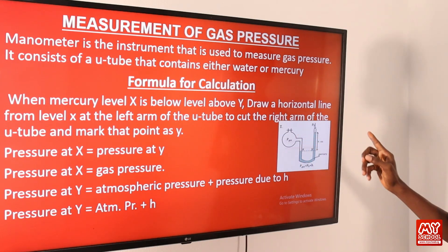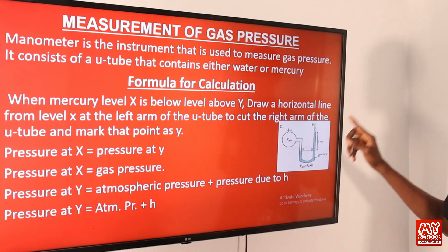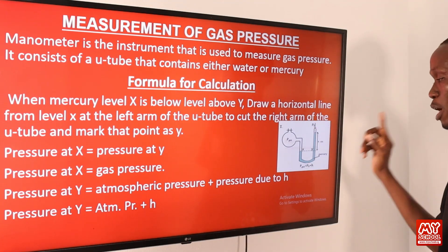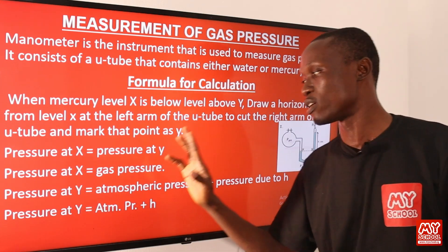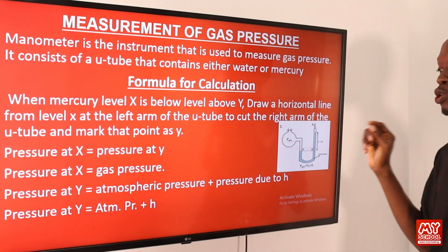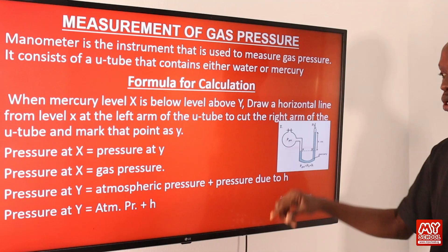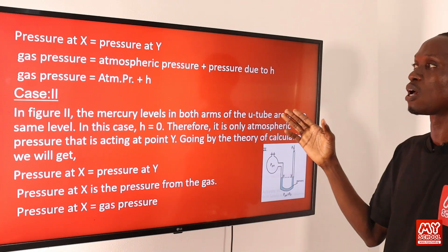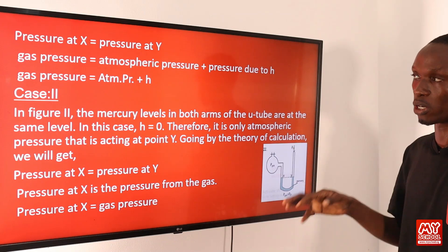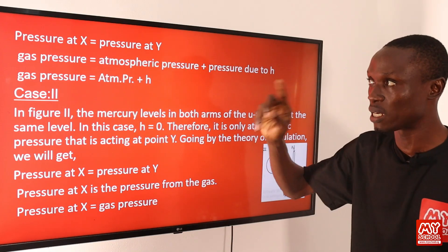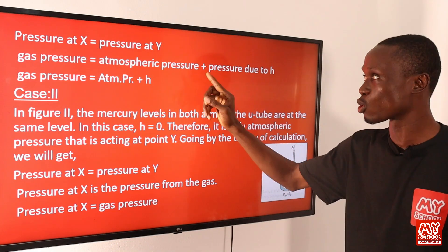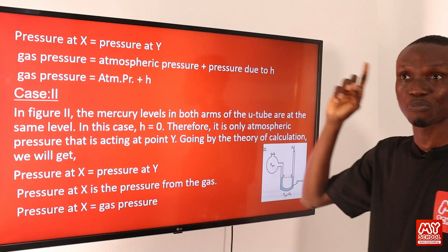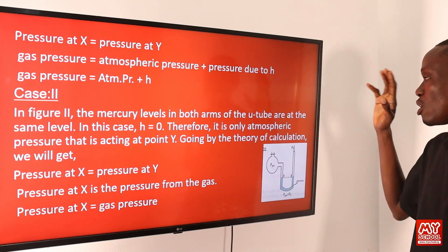The pressure at S is due to the gas pressure, and the pressure at Y is due to atmospheric pressure, plus the pressure due to the height of mercury column h. So, pressure at Y equals atmospheric pressure plus pressure due to the height of mercury column h. Since pressure at S equals pressure at Y, gas pressure equals atmospheric pressure plus pressure due to the height of the mercury column.